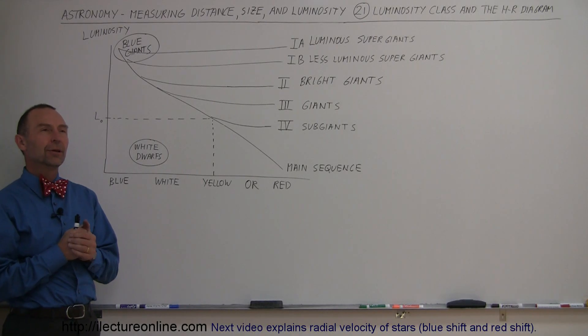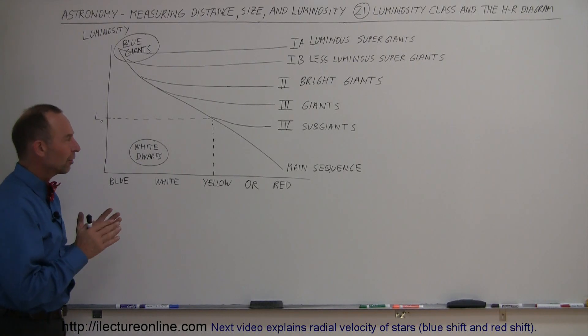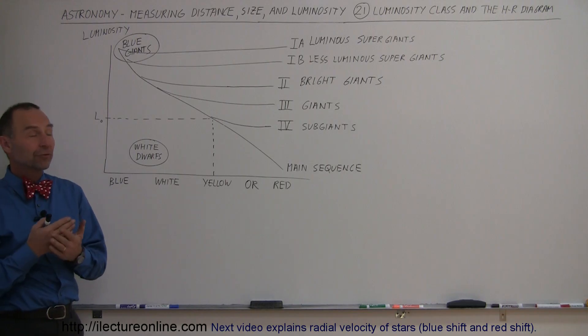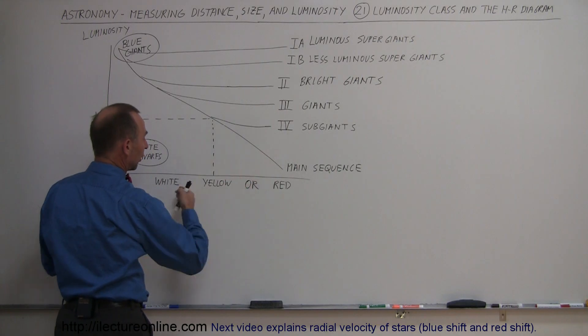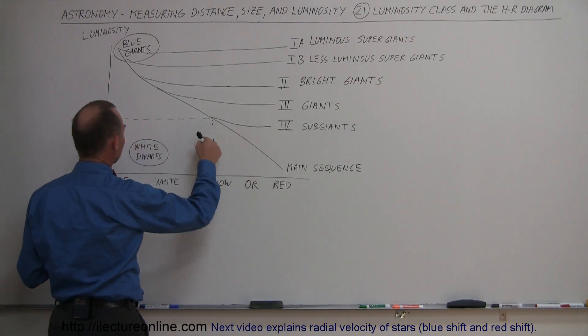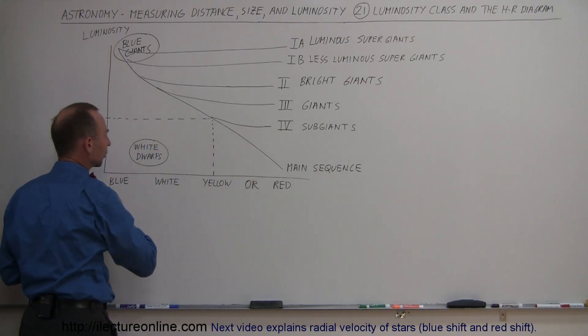Now, you may have wondered, if a star is a main sequence star, you're able to find the absolute magnitude of the star. All you have to do is find the color of the star relative to the temperature and then find the corresponding luminosity on the vertical scale over here.